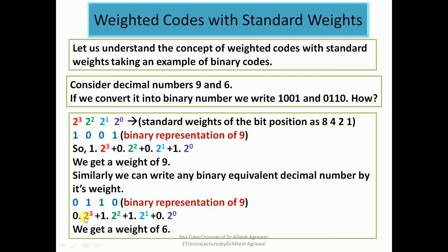For 6 represented as 0110: 0×2^3 + 1×2^2 + 1×2^1 + 0×2^0 = 4+2 = 6. In this example we understand how, according to the weight of the bit position, decimal numbers are written in terms of weighted codes.